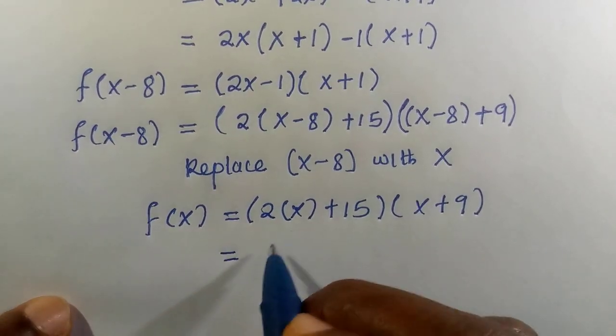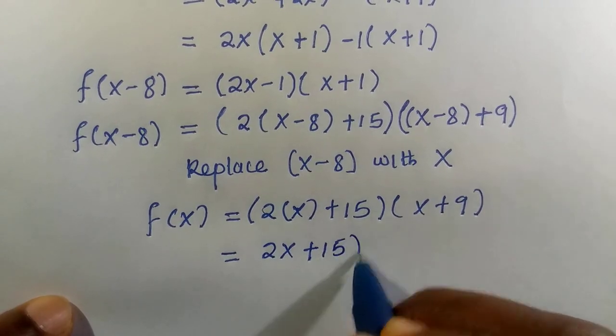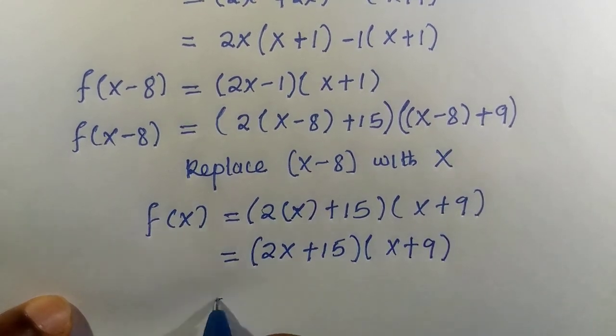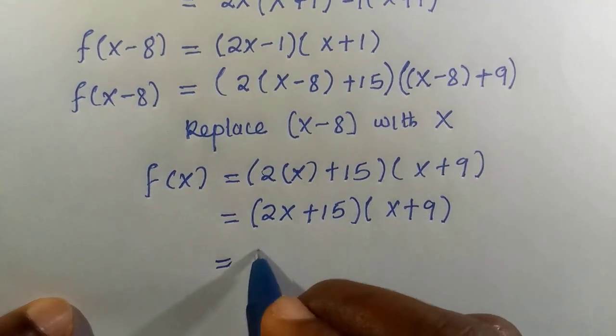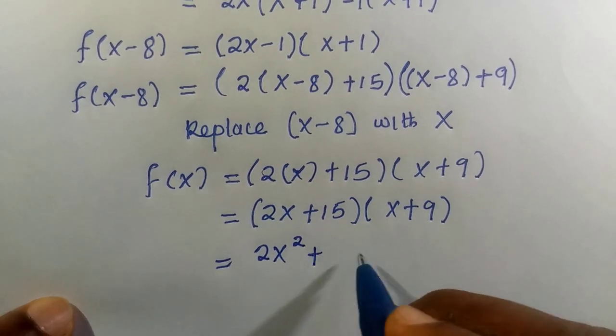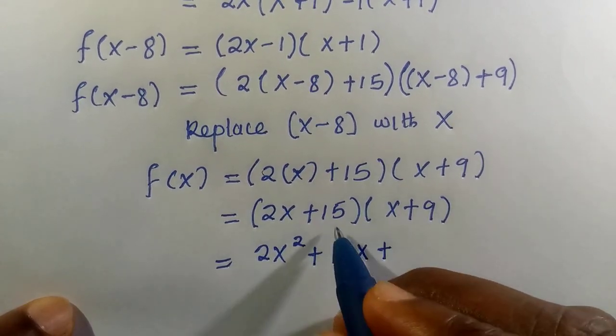Here we have 2 times x is 2x + 15, open bracket, x + 9. If I try to expand this one, 2x multiplied by x is 2x², plus 2x multiplied by 9 is 18x.